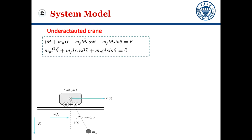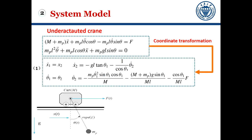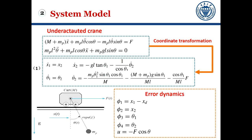The system model of under-actuated cranes and its schematic illustrations are given as follows. The control objective is to make the cart move to the desired position while suppressing the swing of the rope at the destination stage. According to coordinate transformation, we obtain the first equation prepared for the dynamics. From the derivation of variable ζi, the new system model is obtained to design control conveniently.